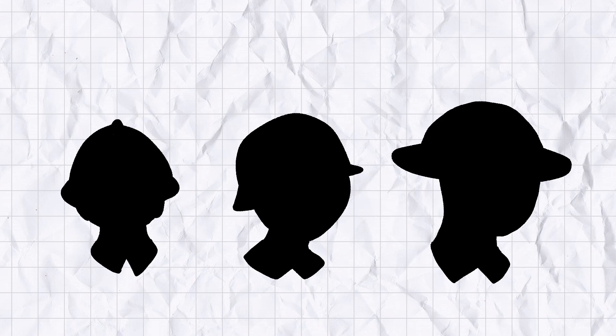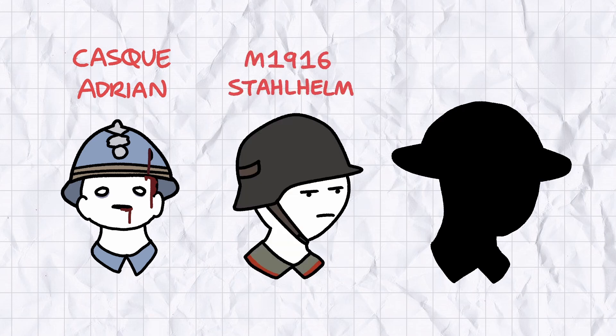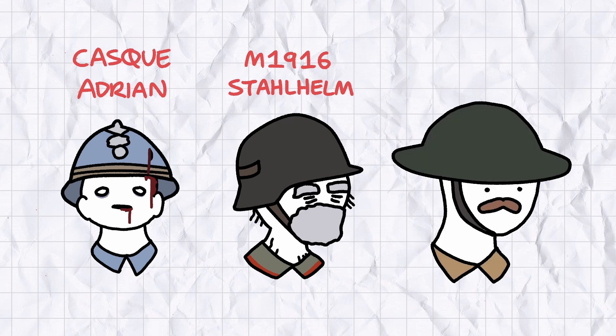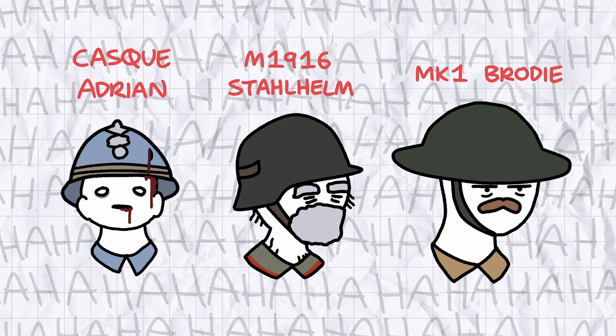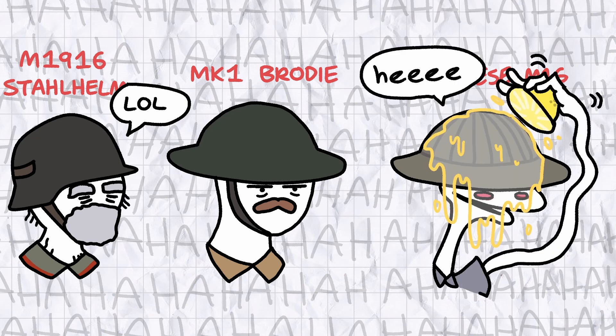It's funny how each country approached this issue. The French got their first, and made the Casque Adrian: revolutionary, trendsetting, and completely useless at taking bullets because of how thin the steel was. The Germans got the M1916 Stahlhelm: bold, well designed, and massively delayed due to the mountain of red tape afflicting the German army. And the British made the Mark 1 Brodie: simple, cheap, and looked ridiculous and badly designed to everyone except the British. Then there's Portugal's variant of the Brodie, look at you go, guys. Who says a helmet can't double as a lemon juicer?